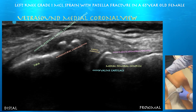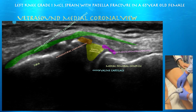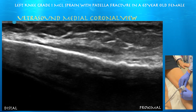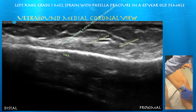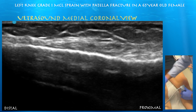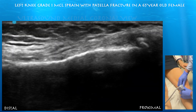And then you can appreciate the MCL inserting onto the tibia. We can see some nice strainy fibers going down. Here you can see some of the pes tendons, I believe, overlying the distal aspect of the superficial MCL — maybe some of the pes tendons in anisotropy, but hard to really say.